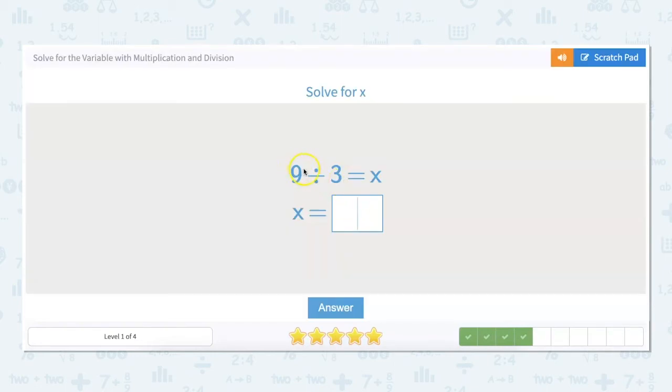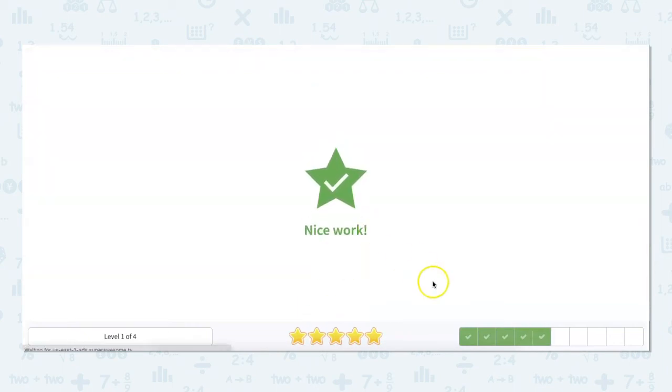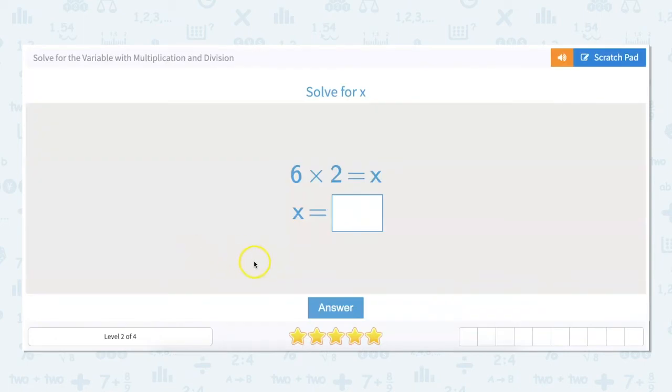Again for this one 9 divided by 3 equals x. So that means x equals... Let's work backwards. What would I multiply 3 by to get to 9? I know that 3 times 3 equals 9. So 9 divided by 3 would equal 3.